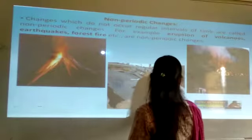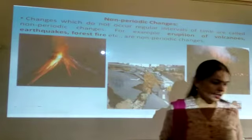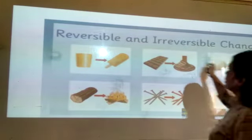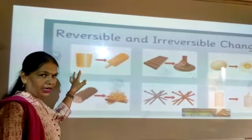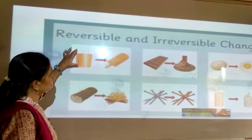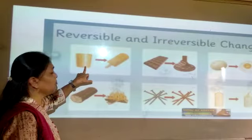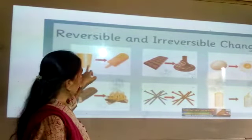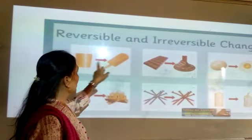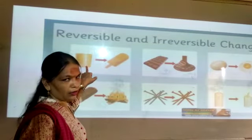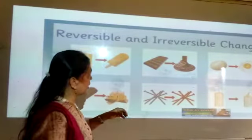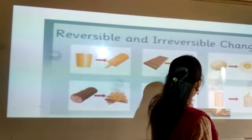All the examples of non-periodic change are covered here. Now for reversible and irreversible change — candy is made from milk or a liquid. When the candy starts melting, it can be converted back into liquid form. This is a reversible change. This is chocolate as an example.